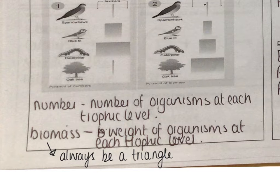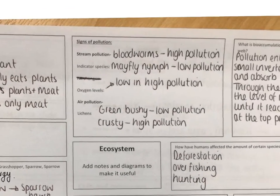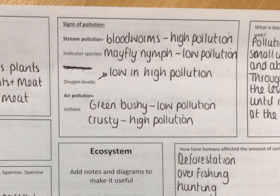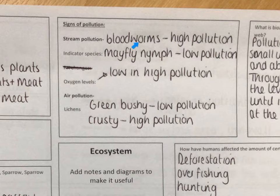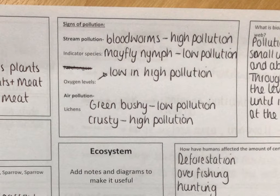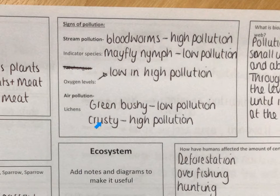A pyramid of biomass will always give you that triangle shape, as shown here. Moving on to indicator species — for stream or water pollution, the main ones are: if the water has a lot of bloodworms or different types of worms, there is high pollution. If we have mayfly nymphs, then there is low pollution. Oxygen levels are low in high pollution and high in low pollution. For air pollution, we have lichens as indicator species. If they're green and bushy, we have low pollution. If they're crusty and dry, then it is a high pollution area.